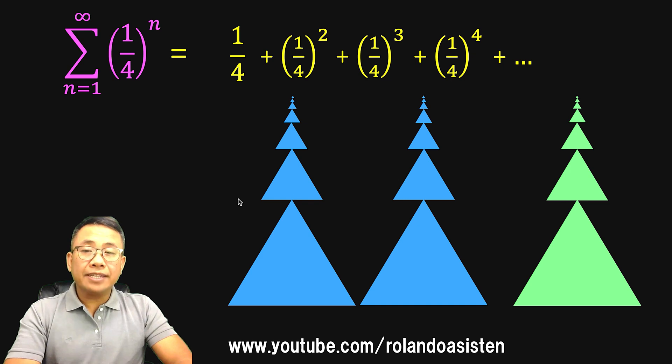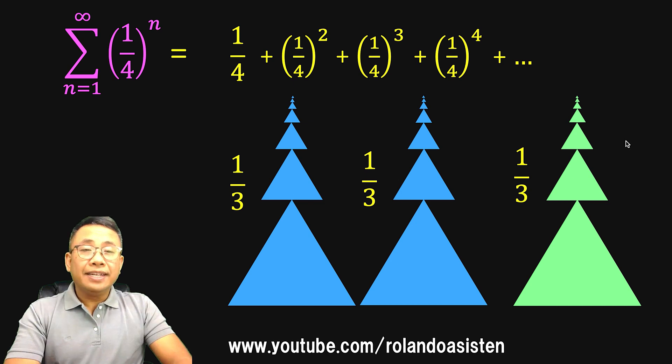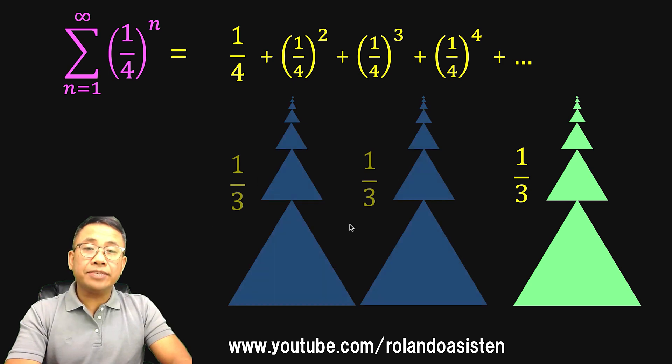The first column of blue triangles represent 1/3 of the area. There's another 1/3 and this is another 1/3. Notice that this stack of green triangles represent this infinite geometric series. So we do not need these blue triangles. Let's remove them.